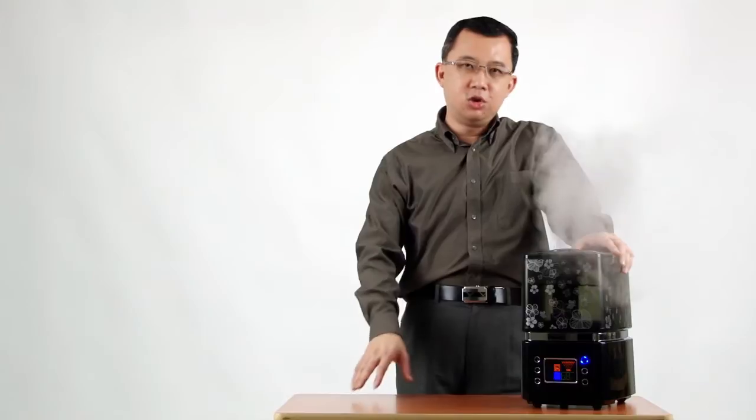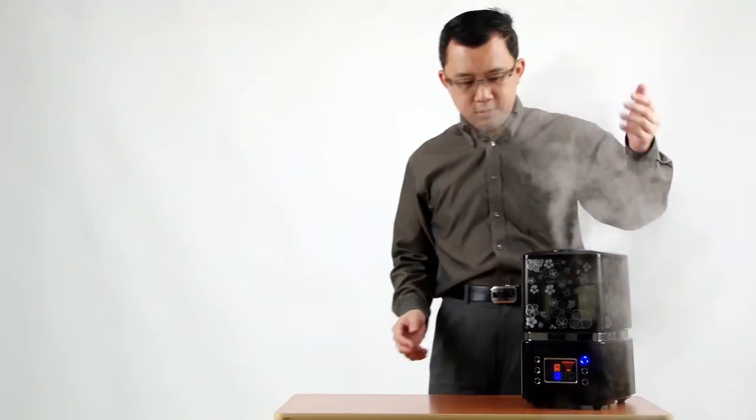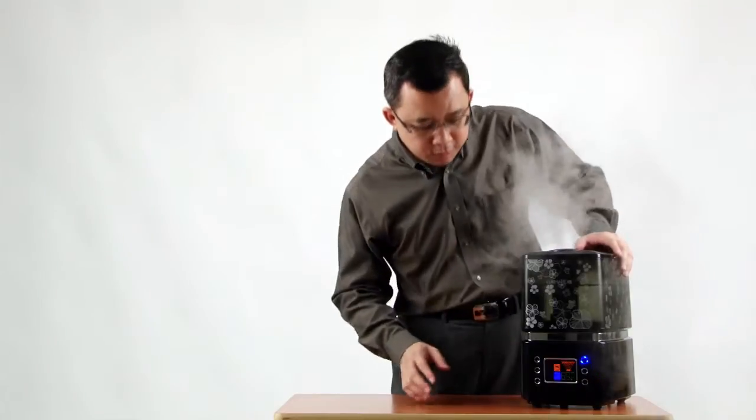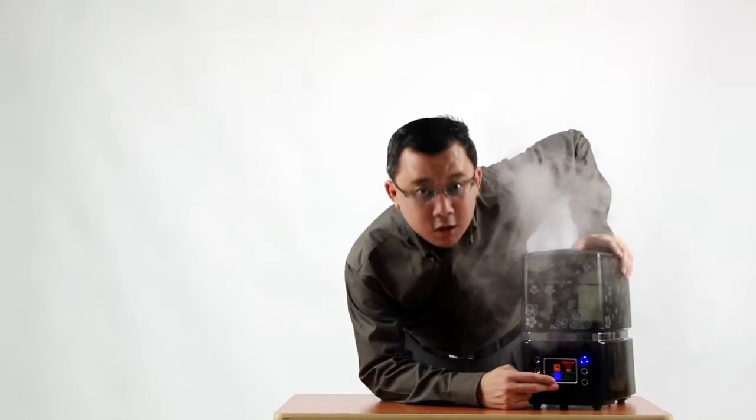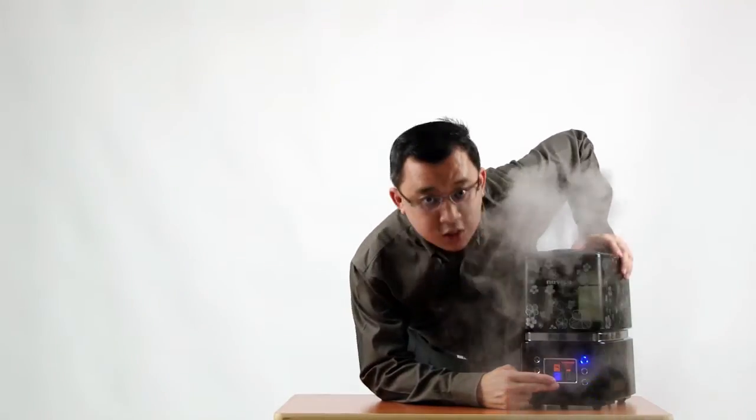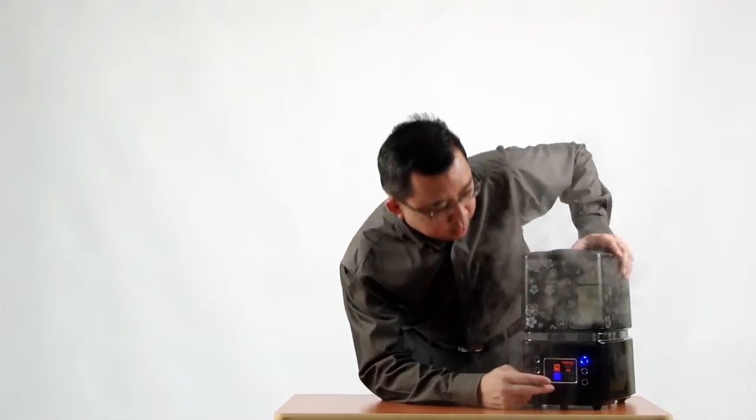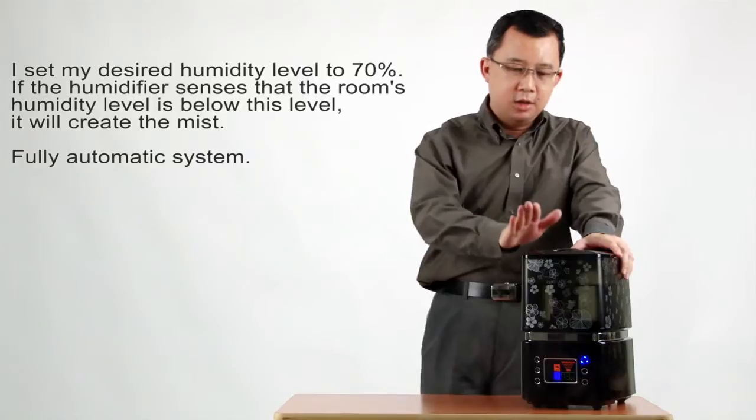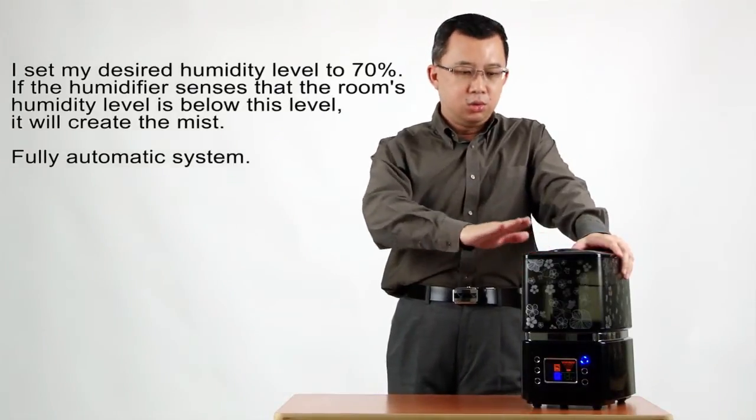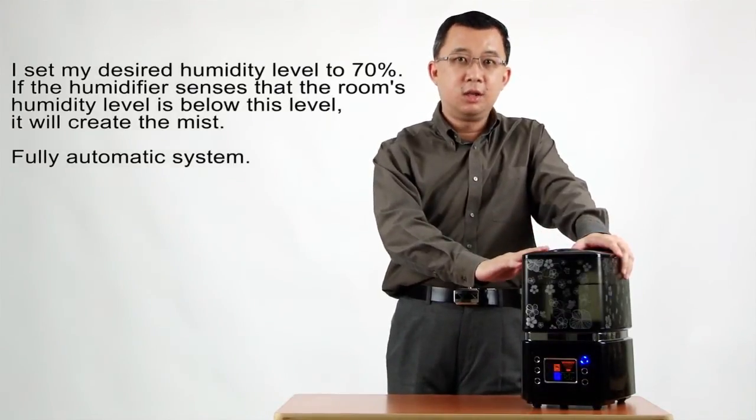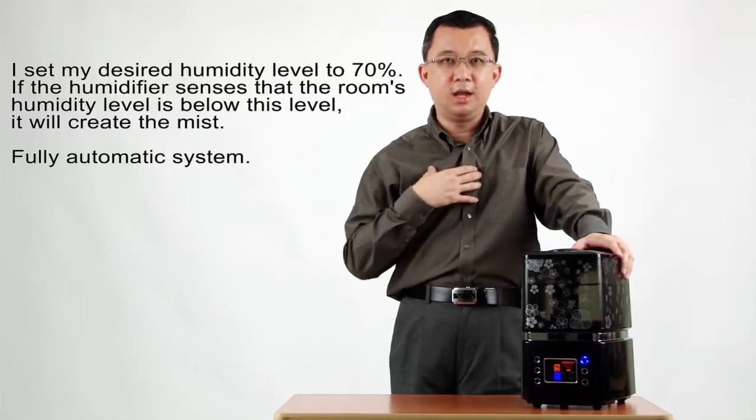As you can see here, the humidifier is now producing a lot of fine mist. Now why is it so? If you look at the display over here, it is showing you 66% humidity level in this room right now. I actually set the humidifier to 70% humidity level as the desired level that I feel comfortable.